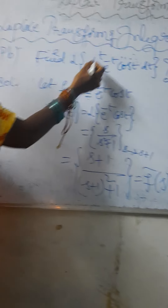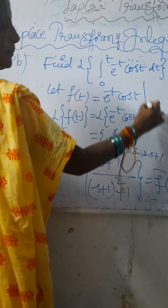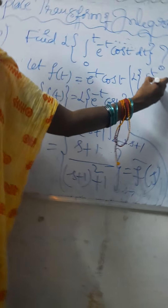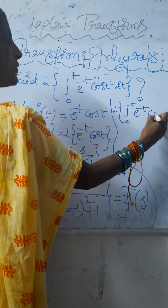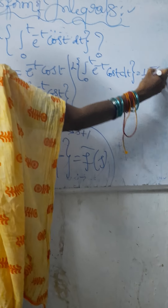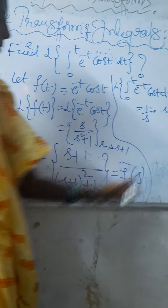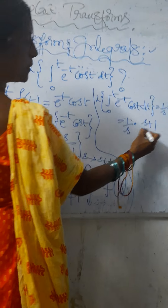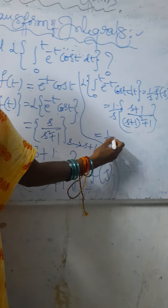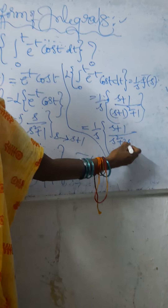Now we have to find out the Laplace transform of integral of 0 to t, e to the power minus t cos t dt. By the formula, this equals 1 by s times f bar of s, that is, 1 by s into s plus 1 by s plus 1 whole square plus 1. After simplification, this gives 1 by s times s plus 2 — that is the final answer.